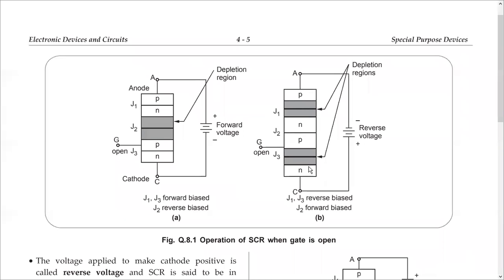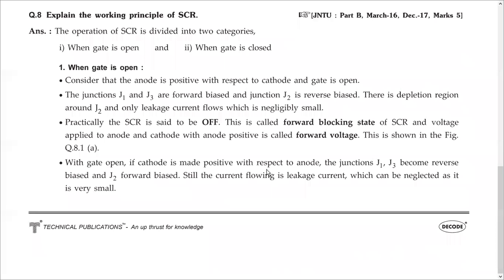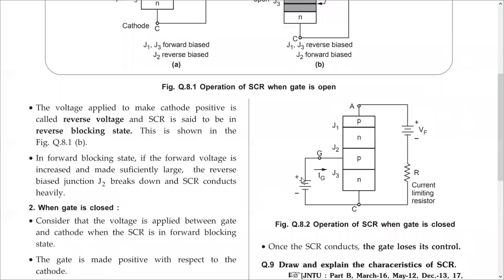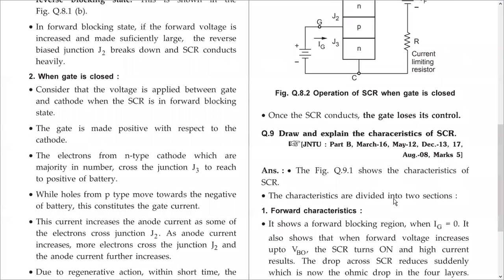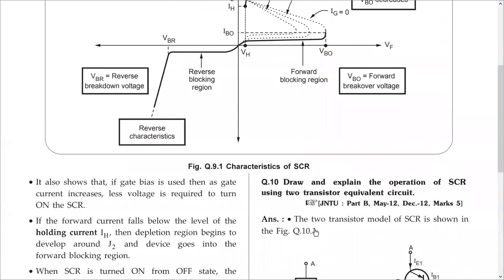When we didn't connect anything to the gate terminal — now suppose if we connect something and provide gate current. To give the gate current we connect another battery. When we give gate current, once this junction breaks down large current flows. To protect that, we put a resistor — a current limiting resistor — to limit current and protect the device. This is the outline of the working of this device. We have seen both forward and reverse conditions and all the terms we have discussed.